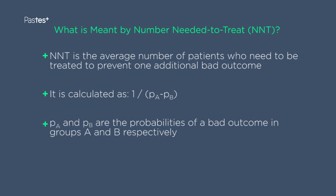Number needed to treat is actually quite easy to calculate. You calculate the probability or proportions of people who have a bad outcome in the two groups. You take the difference between those two probabilities and then you take what's called the inverse. As you can see on the slide, number needed to treat is one divided by the difference in the probabilities of a bad outcome in the two groups being compared.